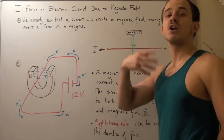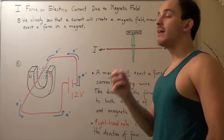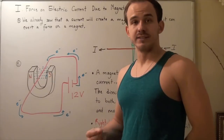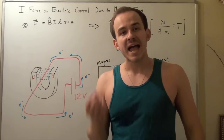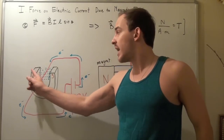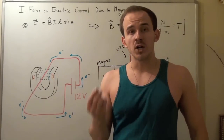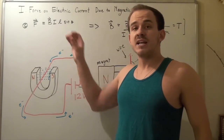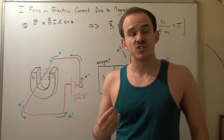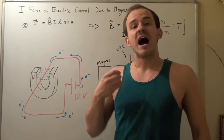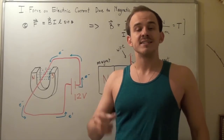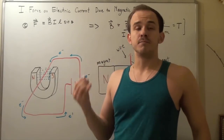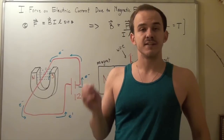Now let's talk about how to find the magnitude — the amount of force that our wire feels due to this magnet. The formula is: Force equals B·I·L·sinθ, where B is the magnitude of the magnetic field, I is the current in the wire, L is the length of wire exposed to the magnetic field, and θ is the angle between the wire and the magnetic field lines.